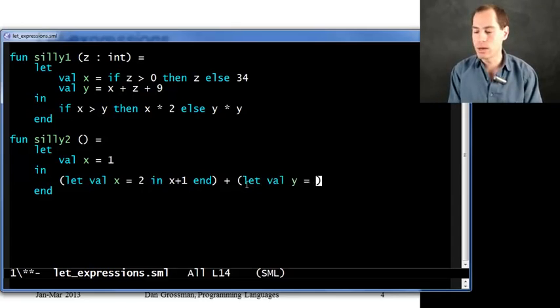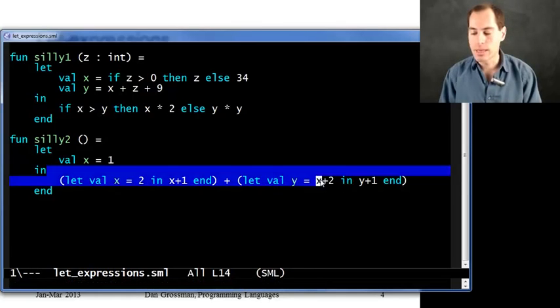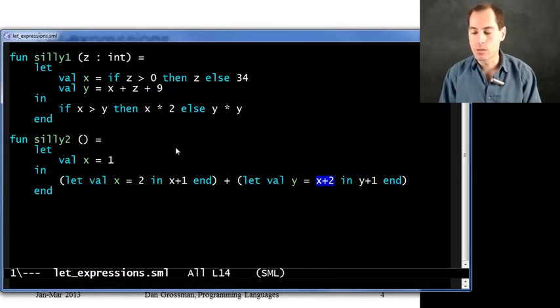What if I had a different let expression over here, where I had x plus two and y plus one? Well, now there's no shadowing. This x and this x plus two is going to refer to this outer one. So, I'll get three here. Y will be bound to three. And so, this body will be four.